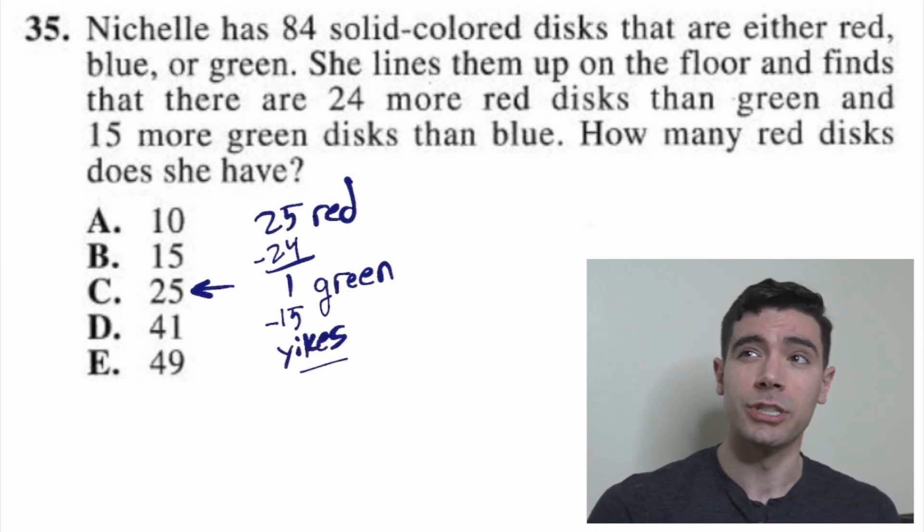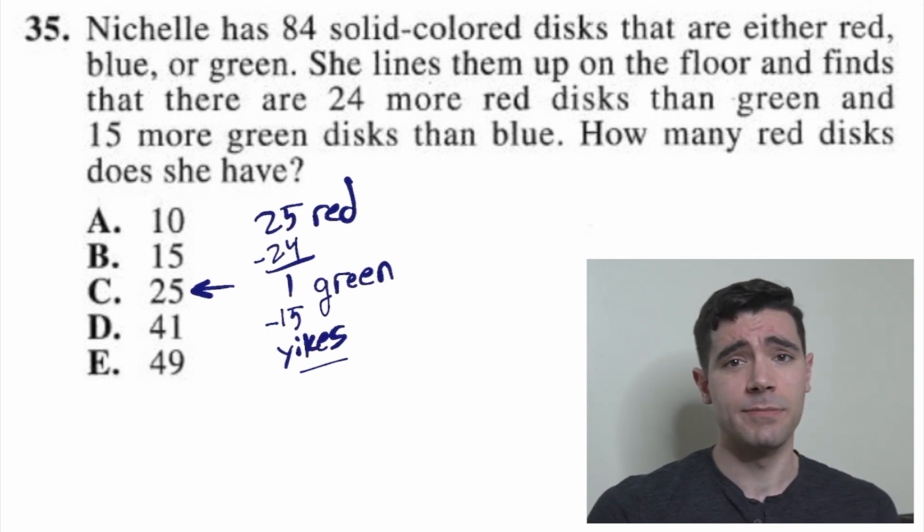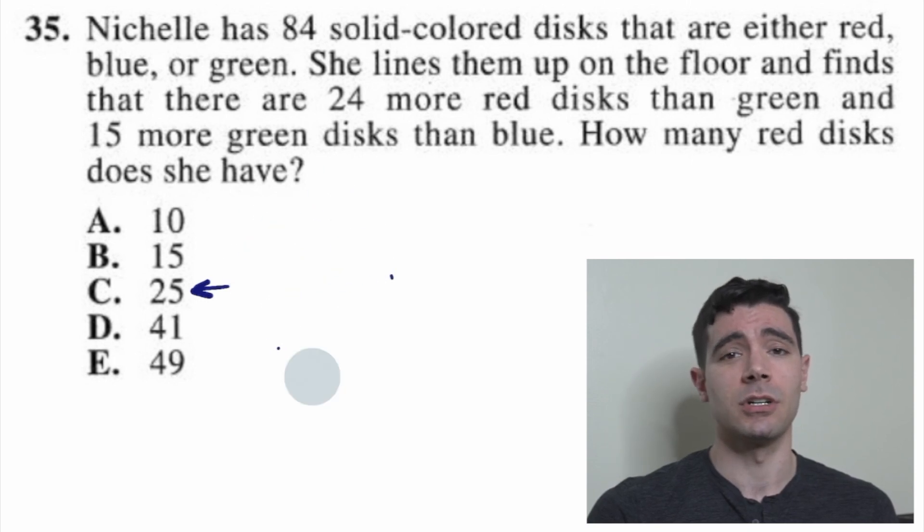I suppose you could owe somebody disks, and you could think of that as negative disks. But that's not really what's happening here. So 25 wasn't big enough. We cross it off, and we can also cross off A and B. Okay, we have two answer choices left. We can move on to D.